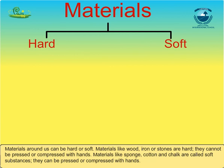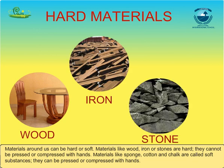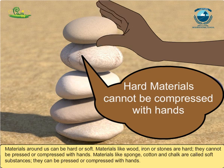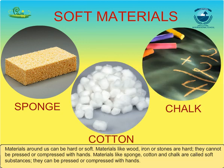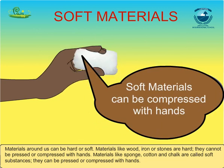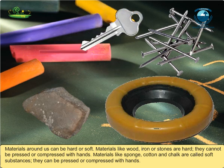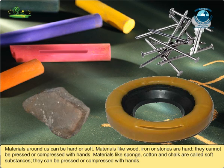Materials around us can be hard or soft. Materials like wood, iron or stones are hard. They cannot be pressed or compressed with hands. Materials like sponge, cotton and chalk are called soft substances. They can be pressed or compressed with hands. Materials like chalk and wax are easily scratched — hence they are soft. Materials like stones and iron nails cannot be scratched — hence they are hard.